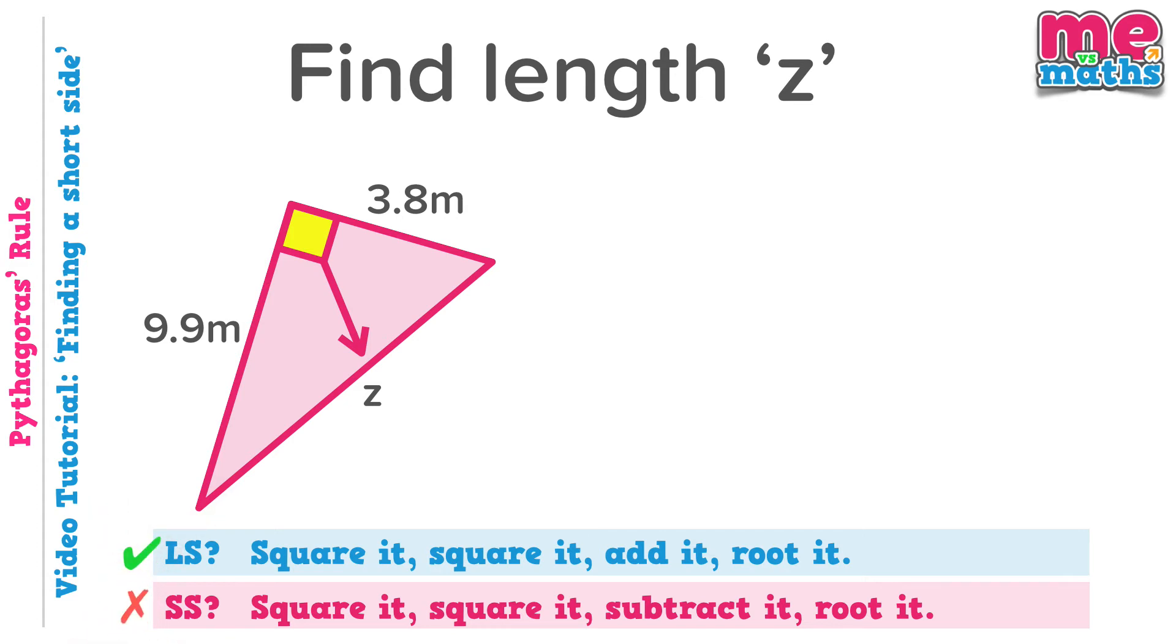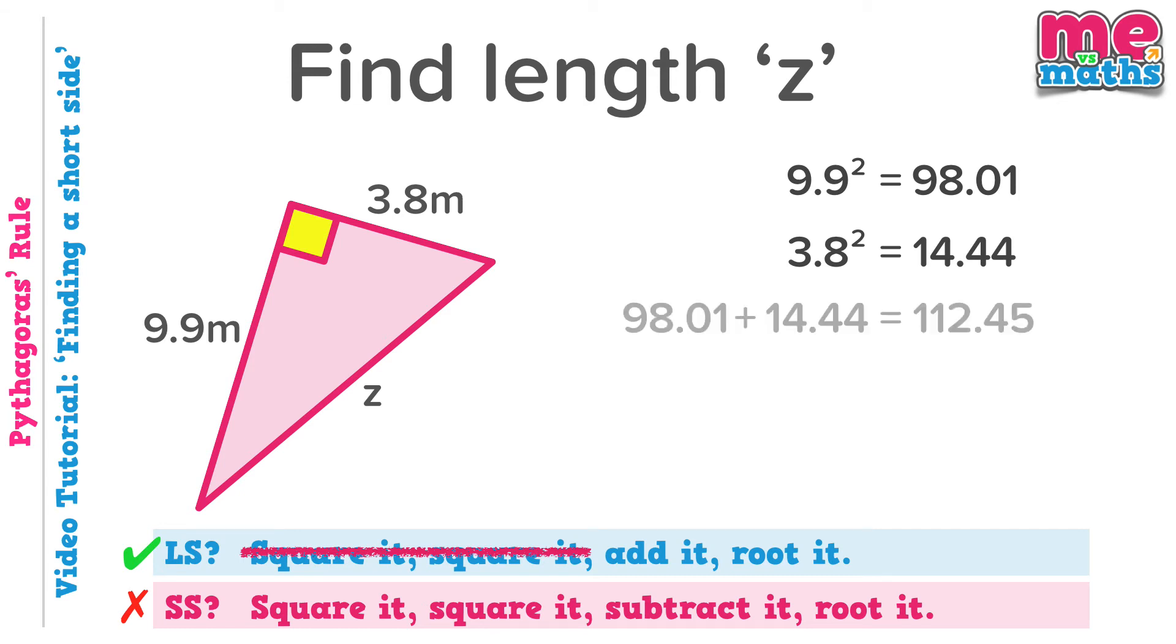So square it, square it, add it, root it. All those steps from the previous tutorial. So 3.8 squared and 9.9 squared. Add those two answers together. Obviously that's far too big, square root it at the end.